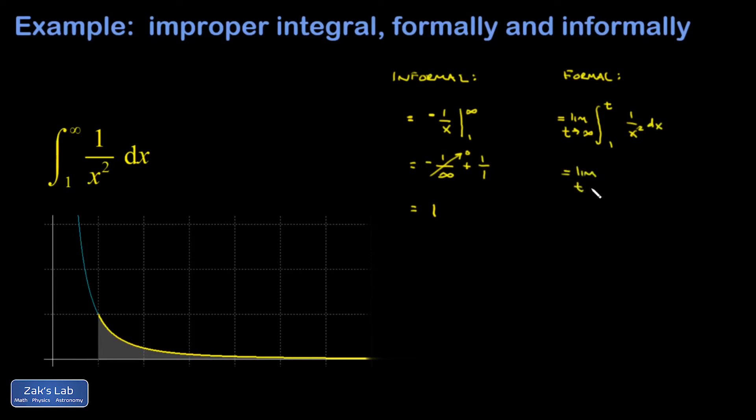So I have a limit as t goes to infinity of negative 1 over x evaluated from 1 to t. Plug in the limits of integration: limit as t goes to infinity, my upper limit is negative 1 over t, my lower limit I subtract that, so I'm going to get a plus sign, and then I plug in the 1 for x.